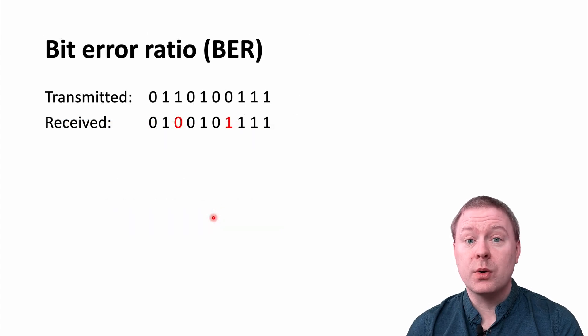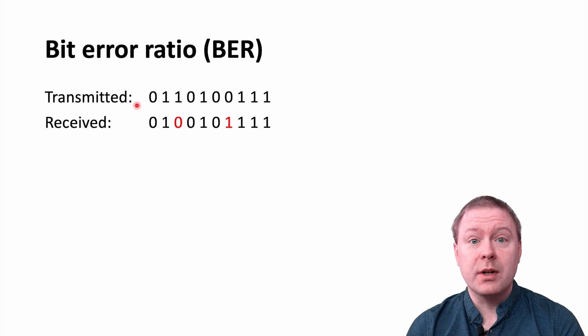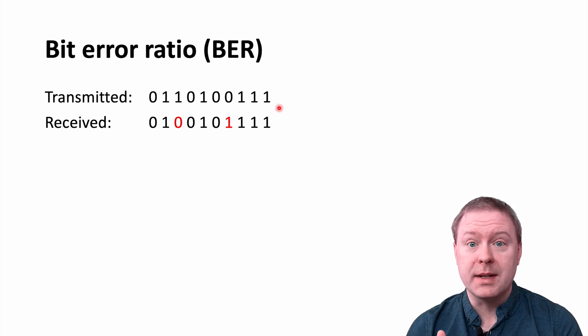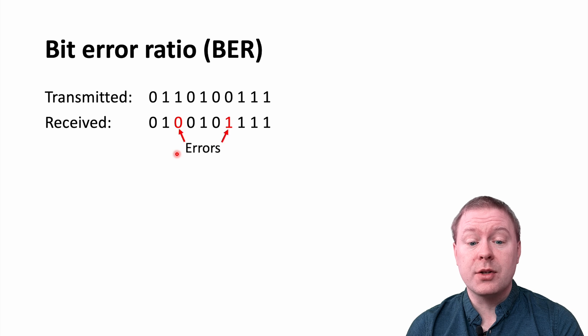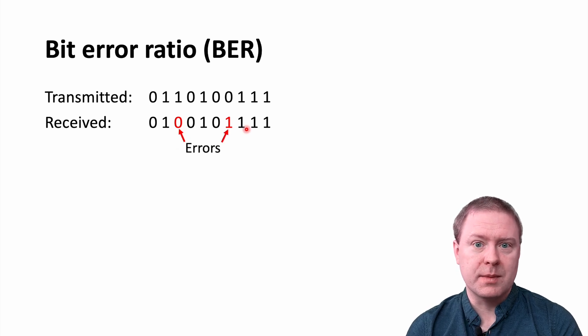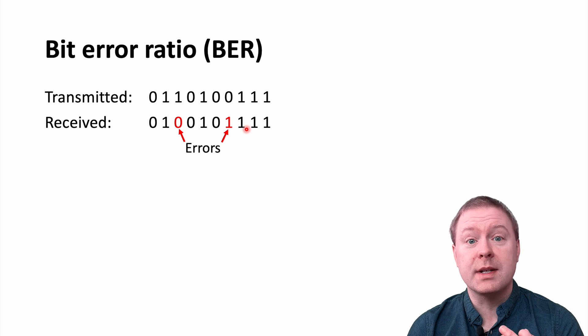The bit error ratio considers the transmission of a certain sequence of zeros and ones. These are our bits. And then you receive a sequence of zeros and ones as well, and you compare the sequences and can determine how many errors were occurring during these transmissions.